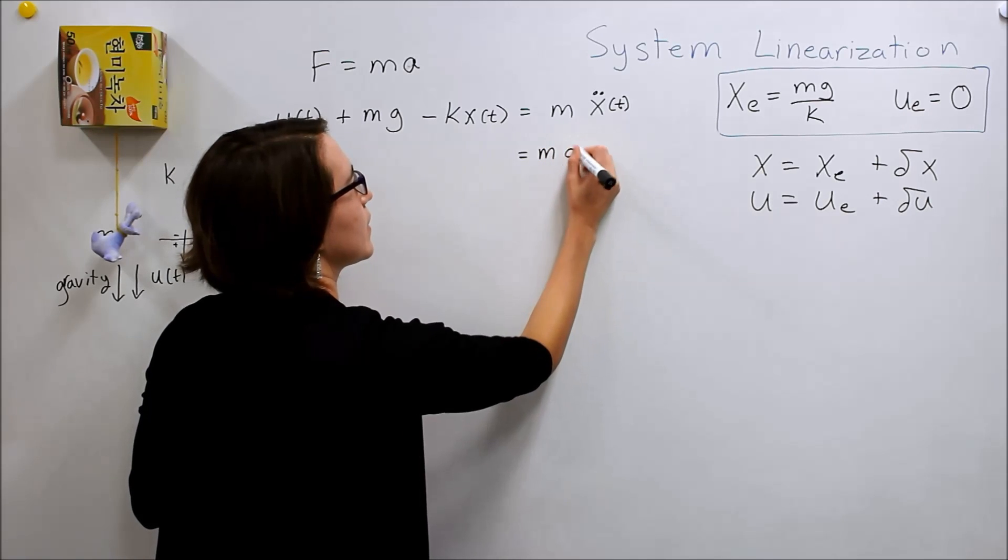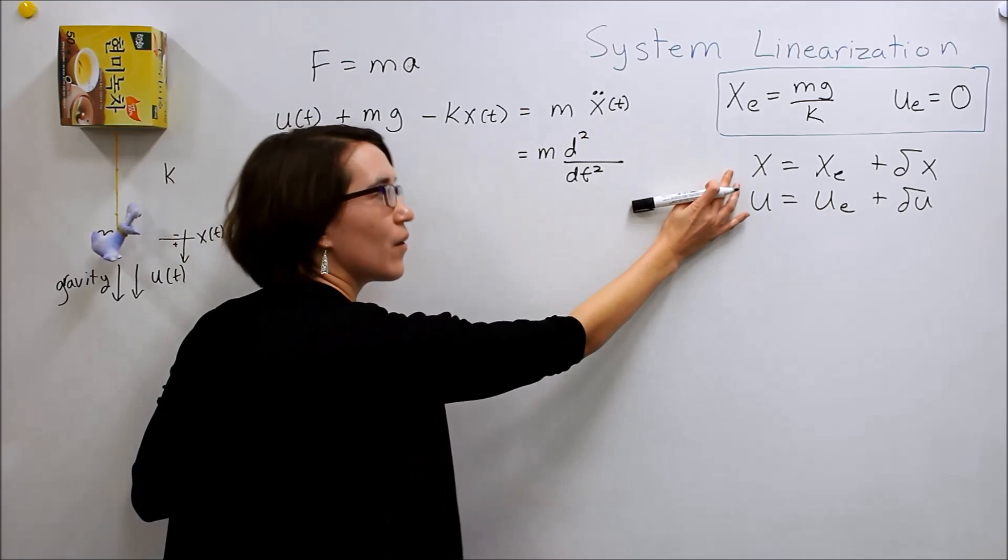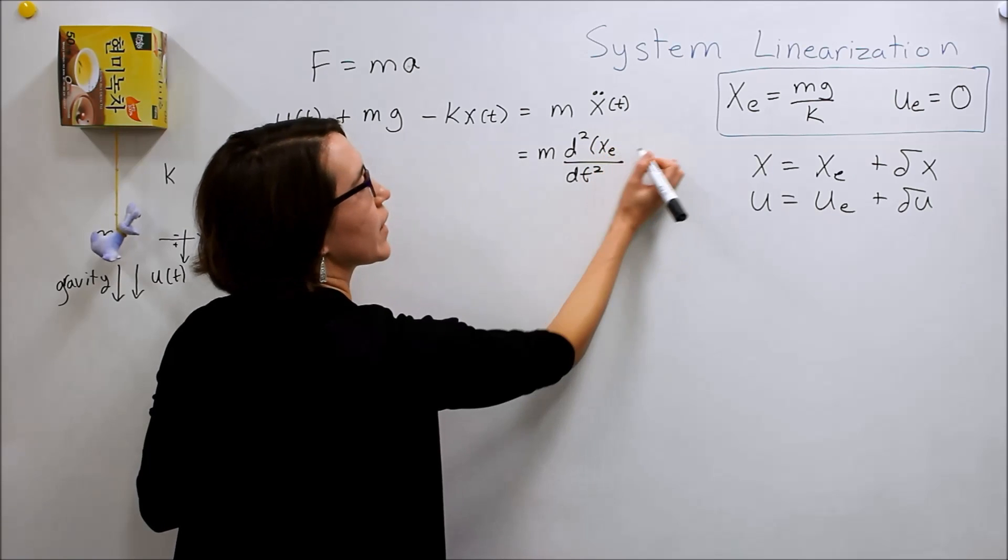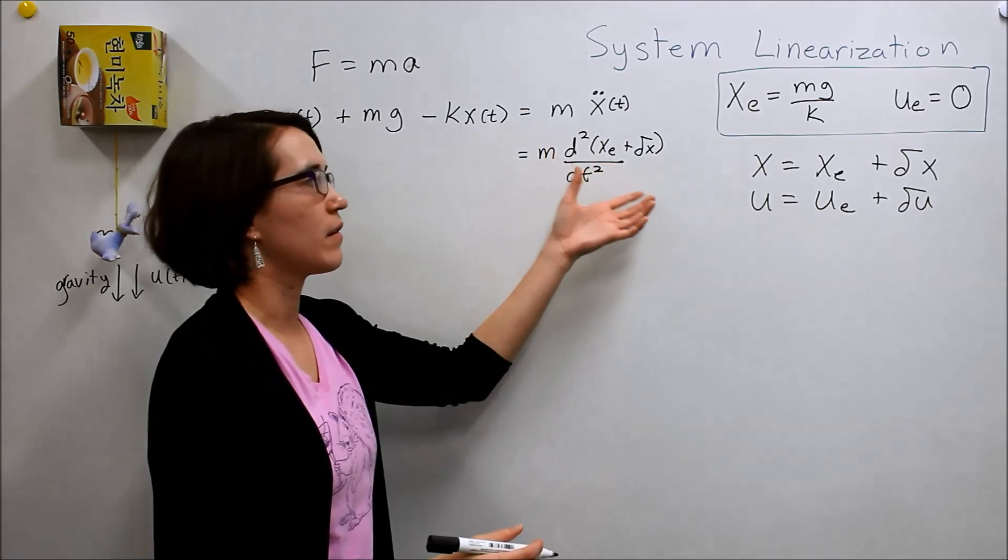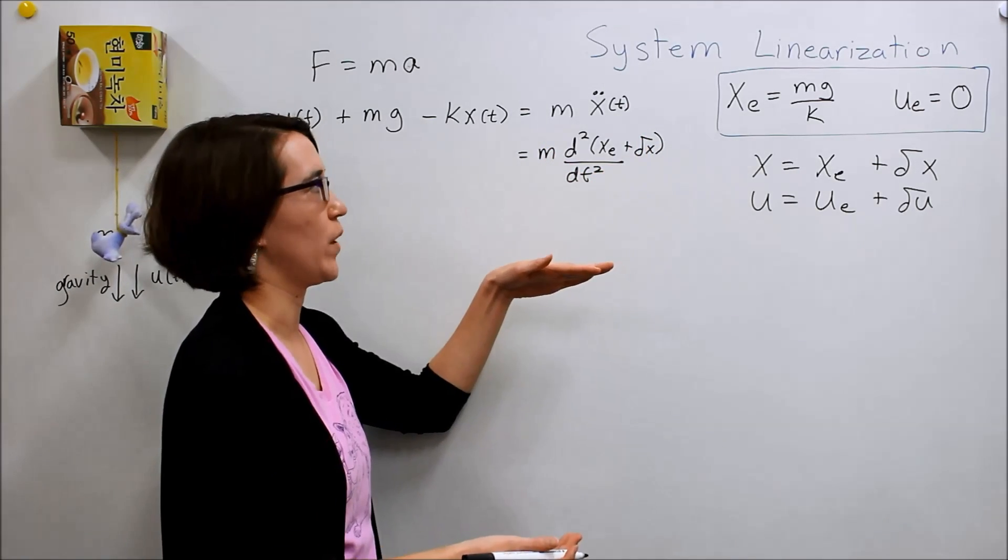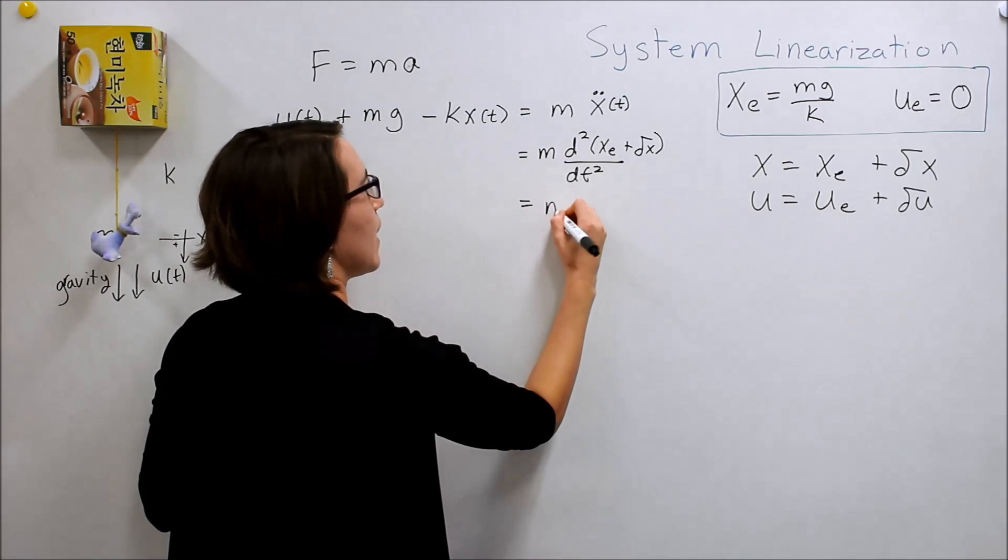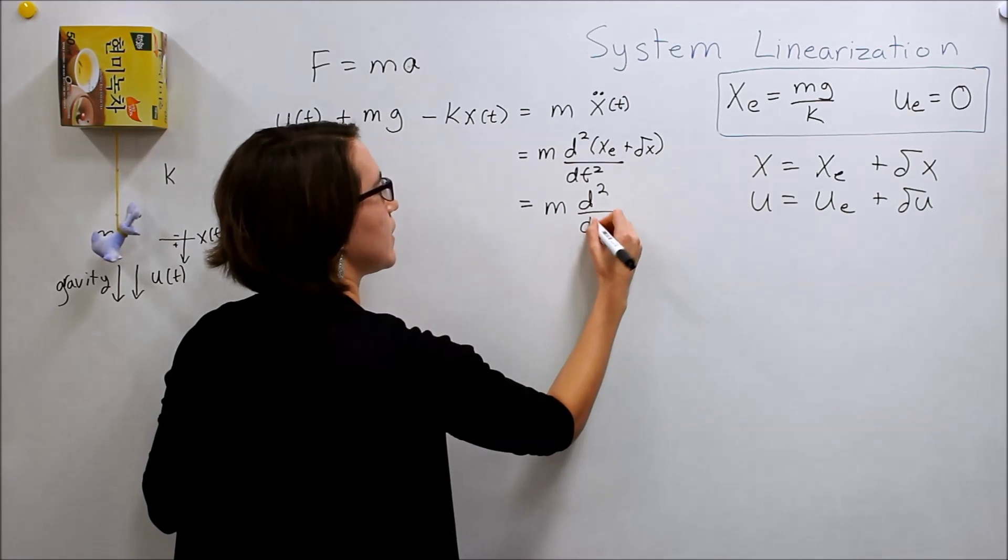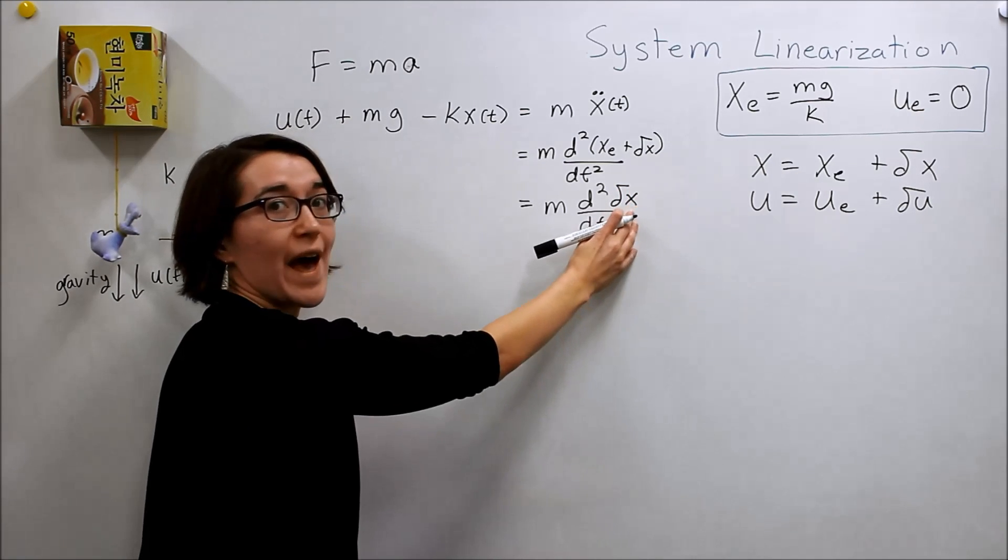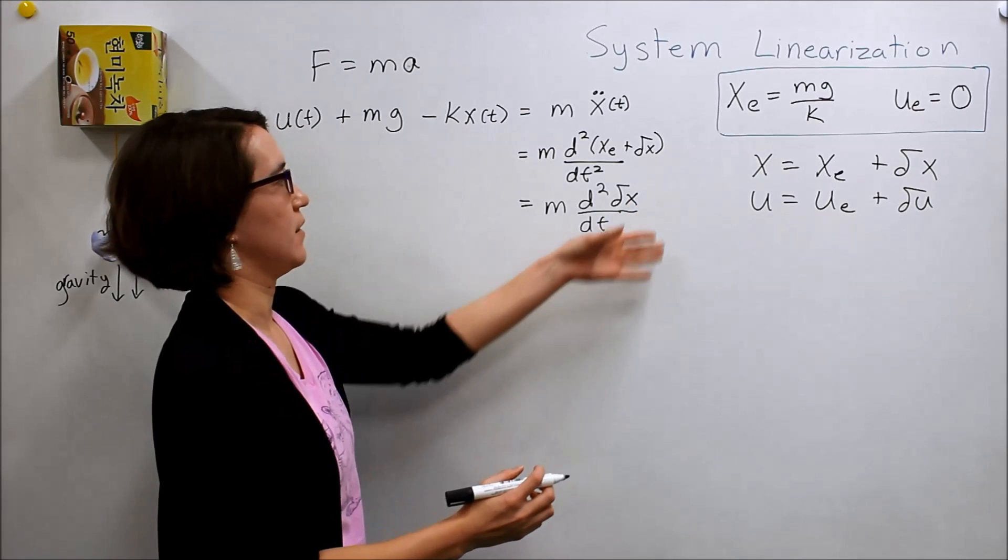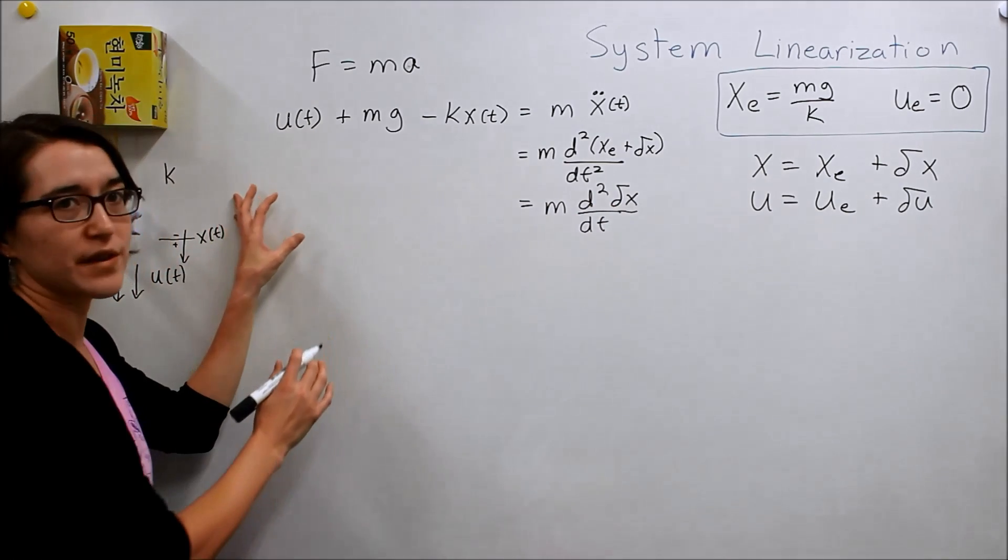And, so we need to linearize these two systems. We're actually going to work on two sides of the equation. So, first we're going to do just the right hand here. So, if we think about what this is. And we have our x. So, this is m times the double derivative with respect to t squared of x. Which is now xe, the equilibrium point, plus delta x. Well, we know that our equilibrium point, that's actually a constant. Because that's our one equilibrium point. So, the derivative of that is actually zero. And so, we get m times the double derivative of our delta x term. So, that's actually relatively easy. So, you're just switching from x to delta x here.